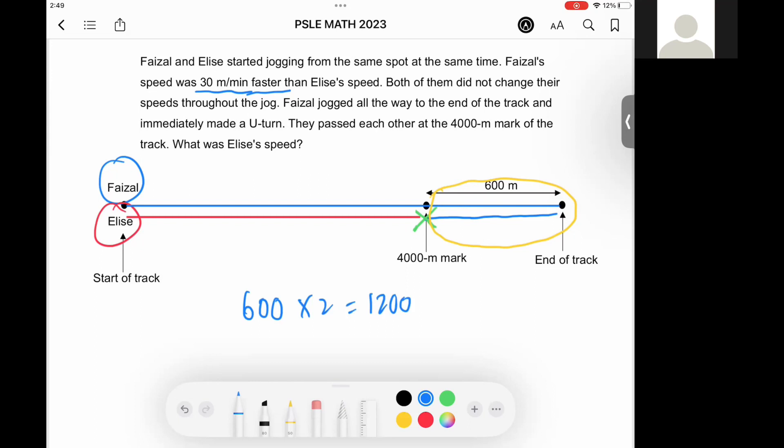According to this clue, every minute Faiza will run 30 meters more than Elise. So if he ran 1200 meters more than Elise, it means they have been running for a total of 40 minutes.